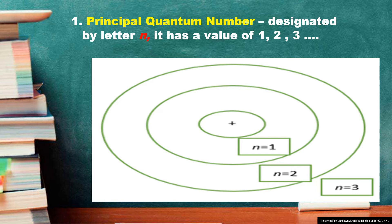Excitation is achieved by supplying energy to the atom from an external source. In the original Bohr model of the atom, the electrons may exist in any allowed circular orbit. A circular orbit was specified by a whole number integer N equal to 1, 2, 3, and so on. This was referred to as the principal quantum number.